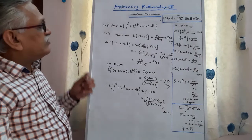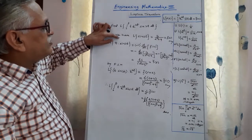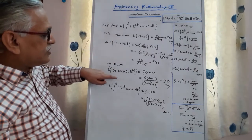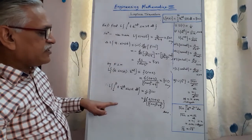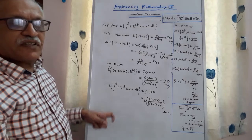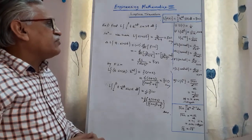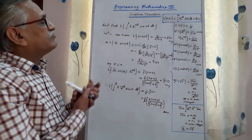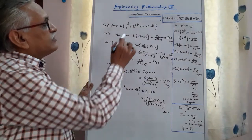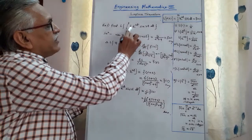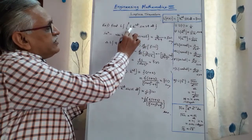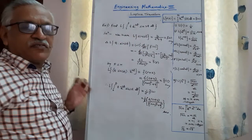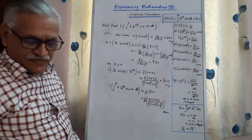In summary: first step, second step, third step, and fourth step. It is a combination of three theorems — multiplication by t, the first shifting theorem, and the Laplace of integral.